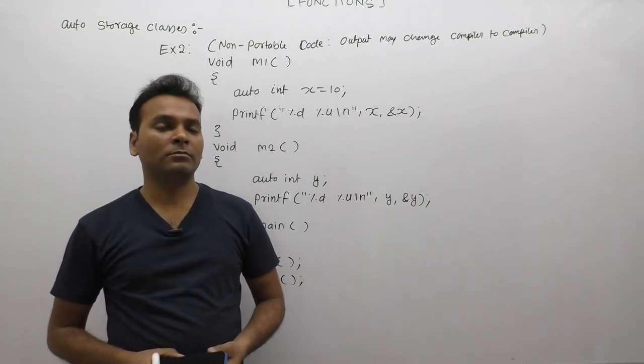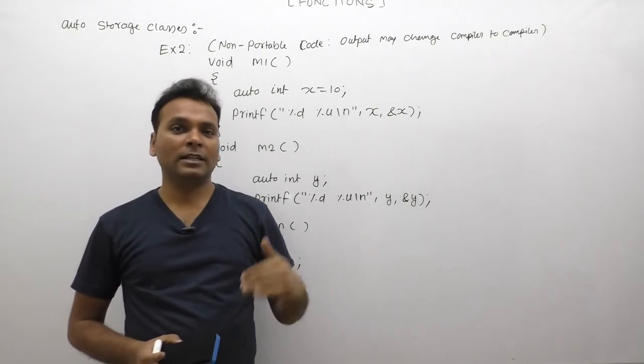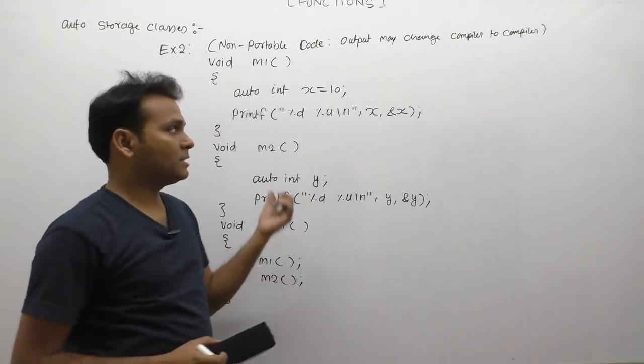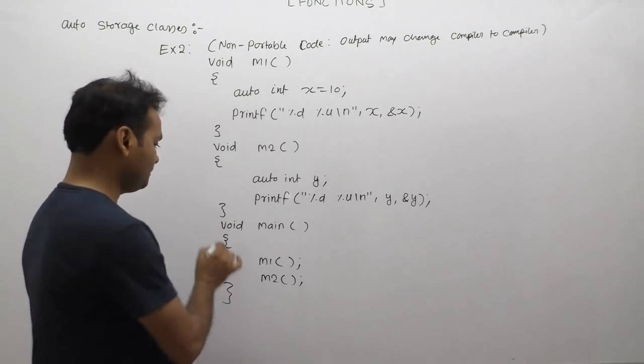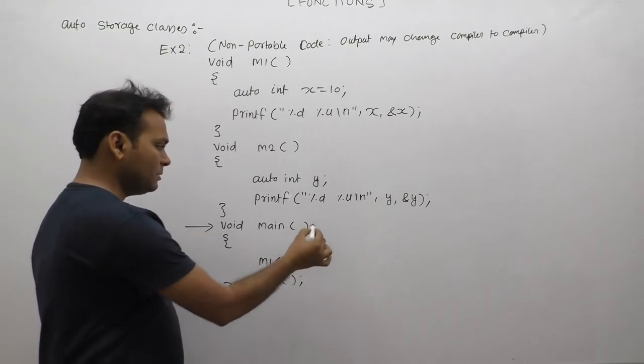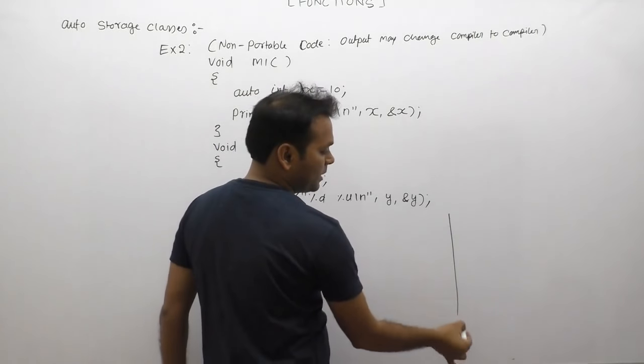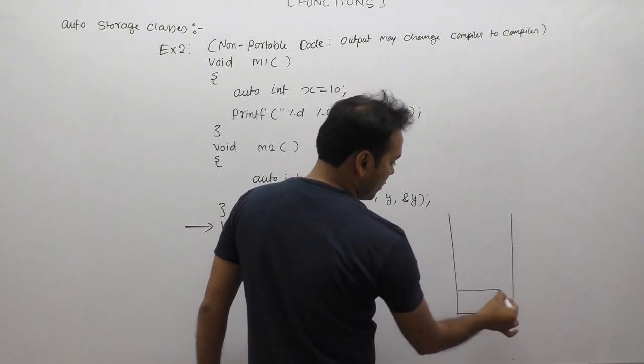The expected output of this program - these are all non-portable development programs, so in that case output may change compiler to compiler. But here we are discussing according to Turbo C compiler. Execution will start from main function. According to memory allocation for local variables of the called functions and calling function will be loaded inside a stack.